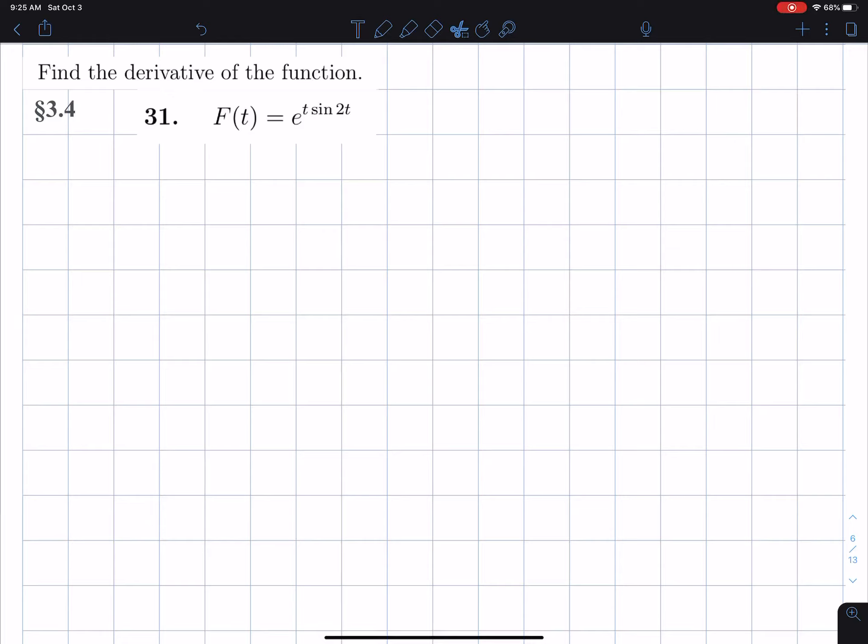All right, we find the derivative of this function here, which is f of t equals e to the power t sine 2t. And what we're going to use is, we use the chain rule.